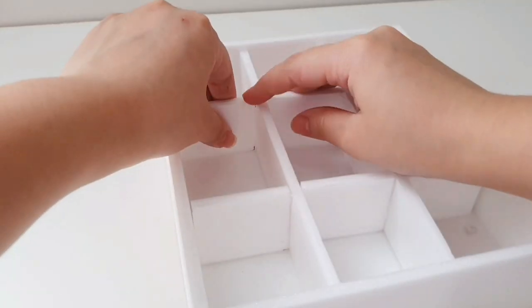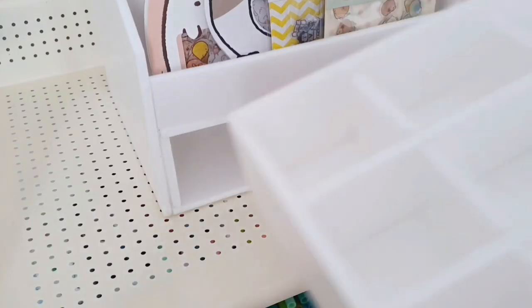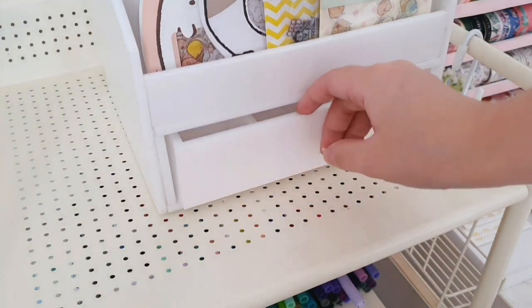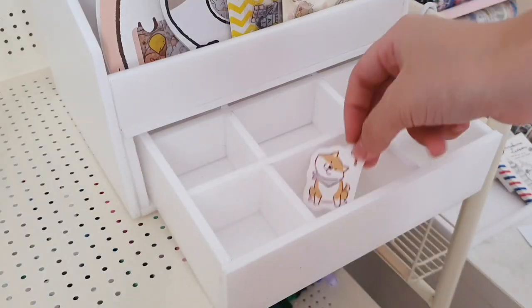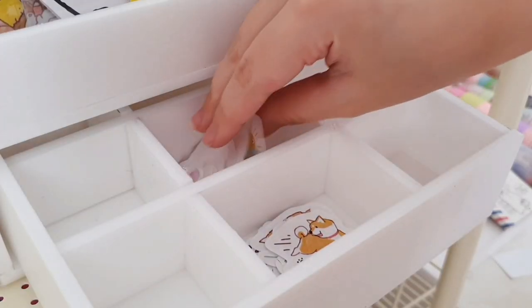However you glue the separators, it should look something like this and you're basically done. So now you can put the drawer into the empty parts that we have on the bottom part of the organizer, and now you can use it to store your sticker flakes.